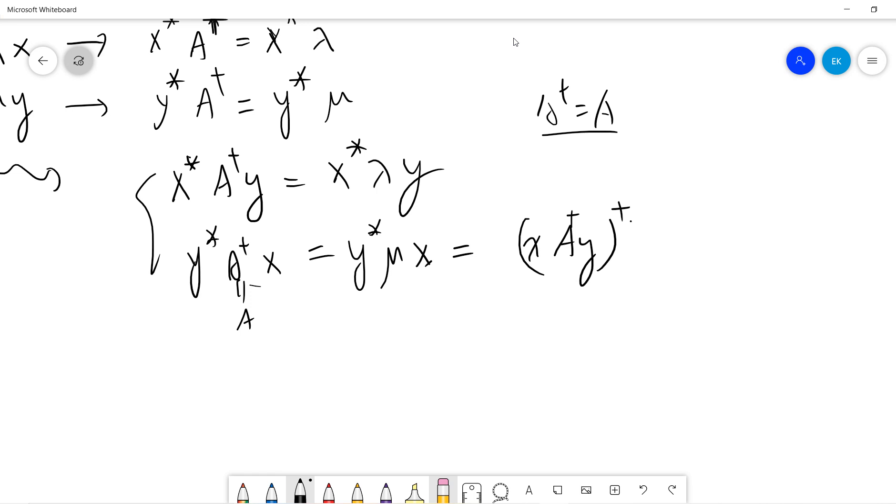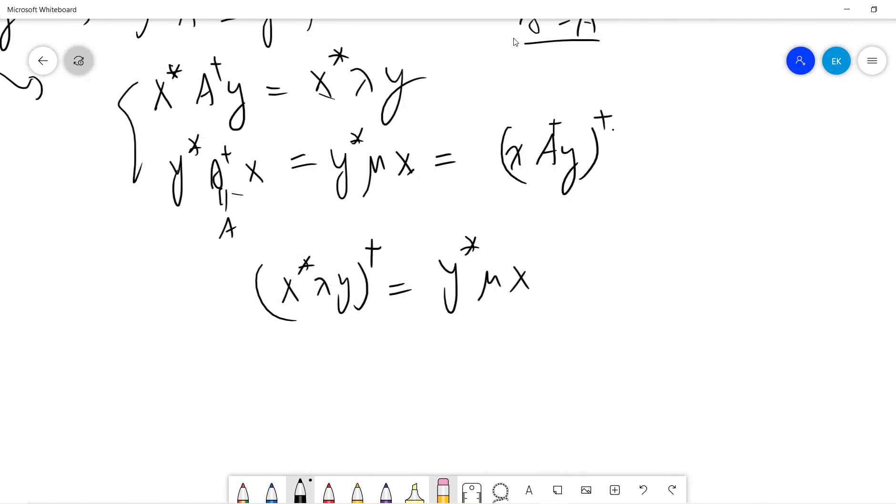If you take the first one you will get the second one. So x star lambda y dagger will give you the second one. And now lambda is real, so mu is also real. So we have this.